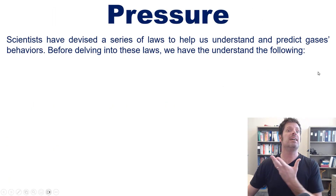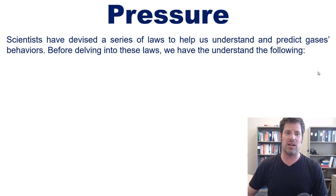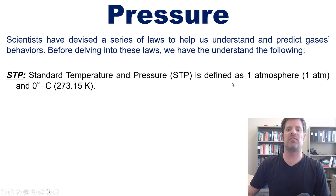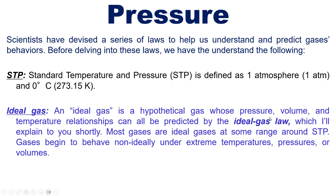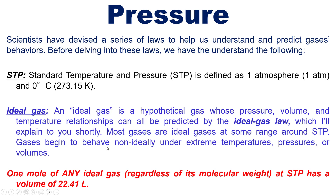Scientists have devised a series of laws to help us understand and predict gas behavior. First, we must understand STP — standard temperature and pressure — defined as one atmosphere and zero degrees Celsius, which equals 273.15 kelvins. An ideal gas is a theoretical gas whose pressure, volume, and temperature relationships can all be predicted by the ideal gas law. Most gases are ideal gases at some range around STP, but gases begin to behave non-ideally under extreme temperatures, pressures, and volumes. One mole of any ideal gas at STP has a volume of 22.41 liters.